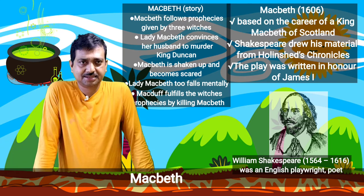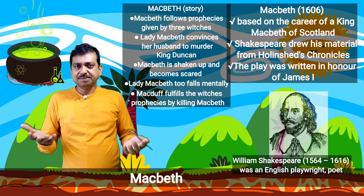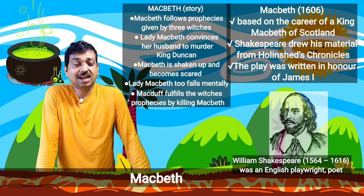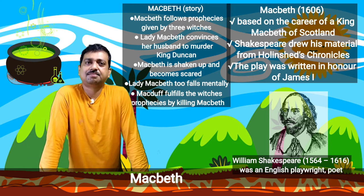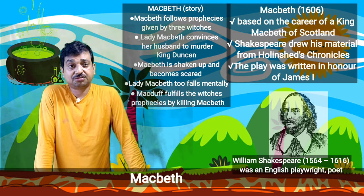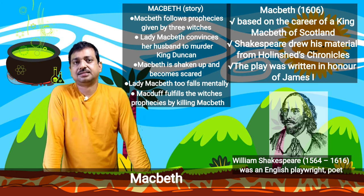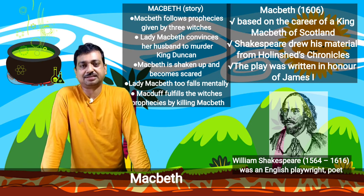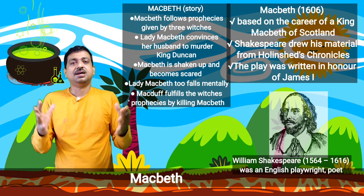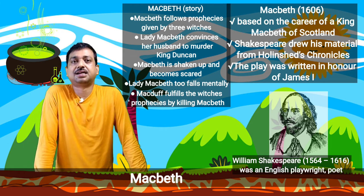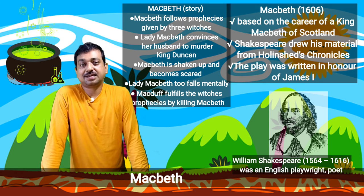Macbeth is the fourth tragedy that students must follow and understand. It is Shakespeare's thriller — a tragedy and relatively easy for students to understand. A tragedy in five acts, first performed around 1606, the play's title role is loosely based on the career of King Macbeth of Scotland. Shakespeare drew his material from Holinshed's Chronicles, though he made many changes — including compressing the entire time frame of Macbeth's reign to suit his dramatic requirements.